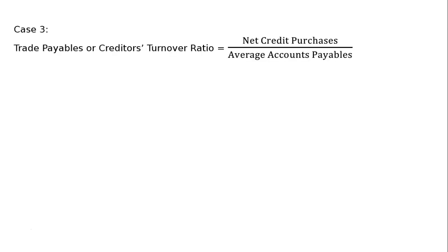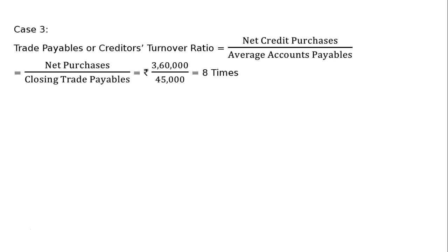Case 3: closing trade payables Rs. 45,000, net purchases Rs. 3,60,000. Trade payables or creditors turnover ratio is equal to net credit purchases upon average accounts payable, that is net purchases upon closing trade payables. That is Rs. 3,60,000 upon Rs. 45,000. As the amounts are directly given to us, and since only one item is given it will not be averaged, the answer is 8 times.